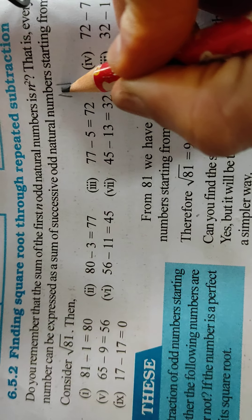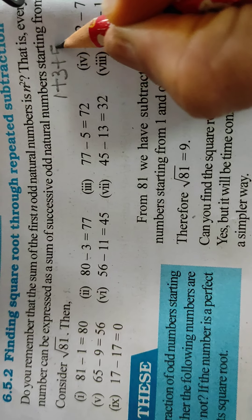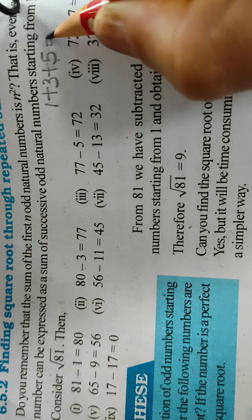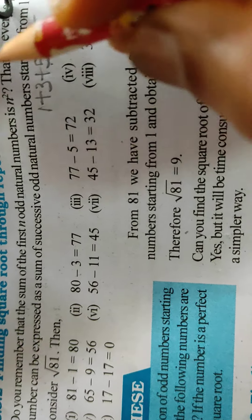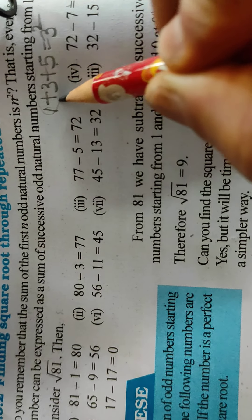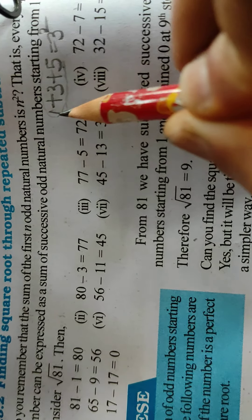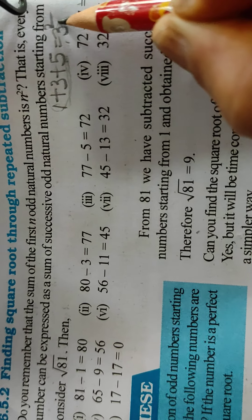Suppose I am writing 1 plus 3 plus 5. How many terms are there? 1, 2, 3. So it will be square of 3, because the sum of n natural numbers is equal to n square. So sum of n terms is equal to n square.